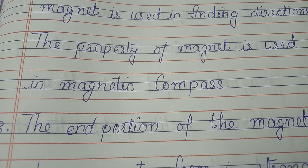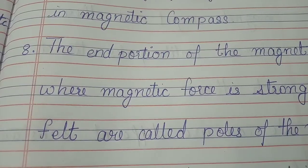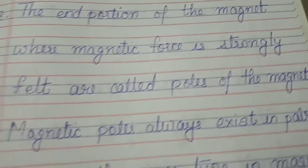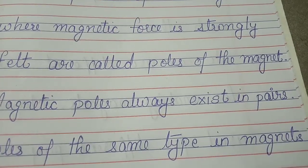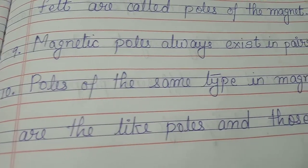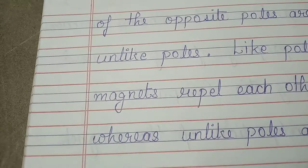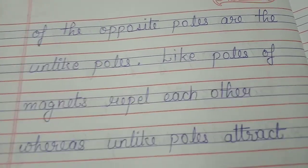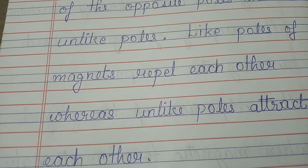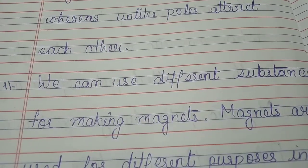The property of magnet is used in a magnetic compass. The end portions of the magnet where magnetic force is strongly felt are called poles of the magnet. Magnetic poles always exist in pairs. Poles of the same type in magnets are the like poles, and those of the opposite type are the unlike poles. Like poles of magnets repel each other, whereas unlike poles attract each other. We can use different substances for making magnets.